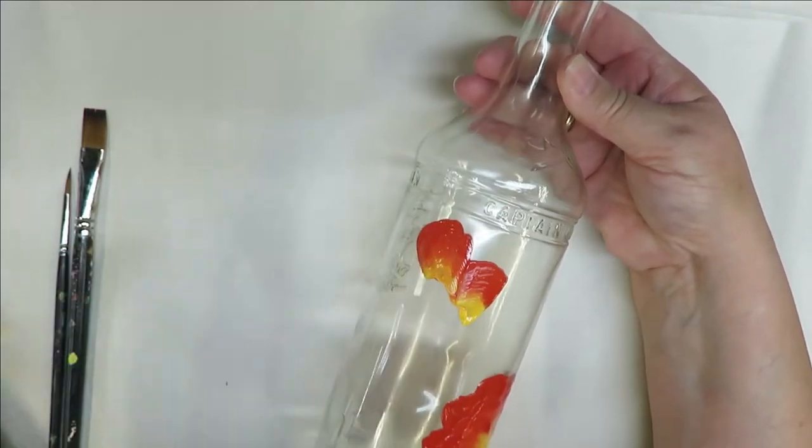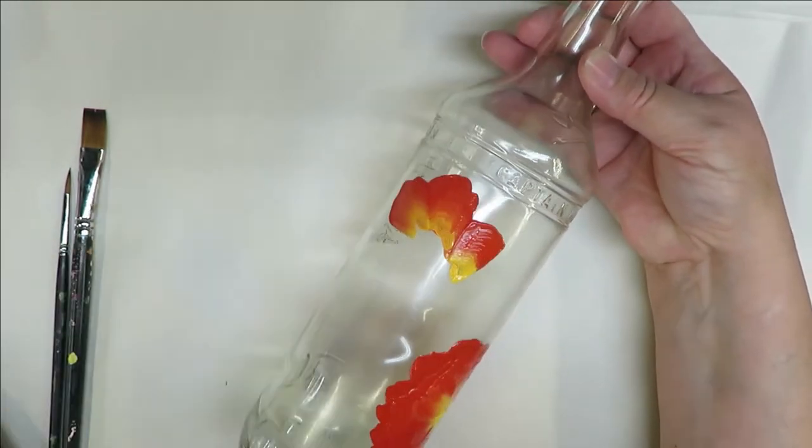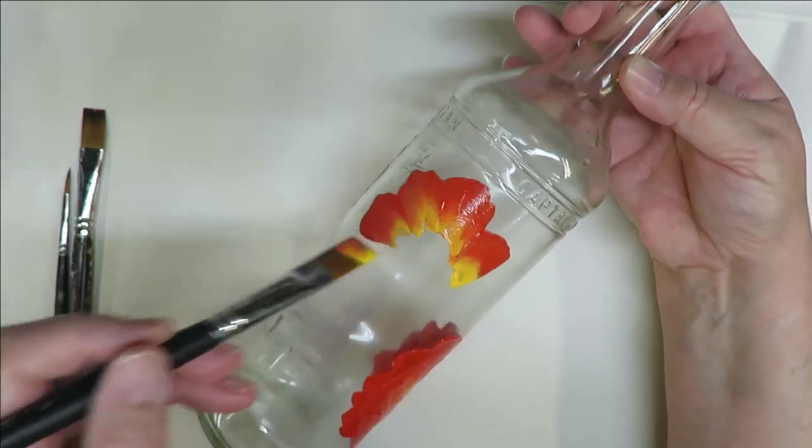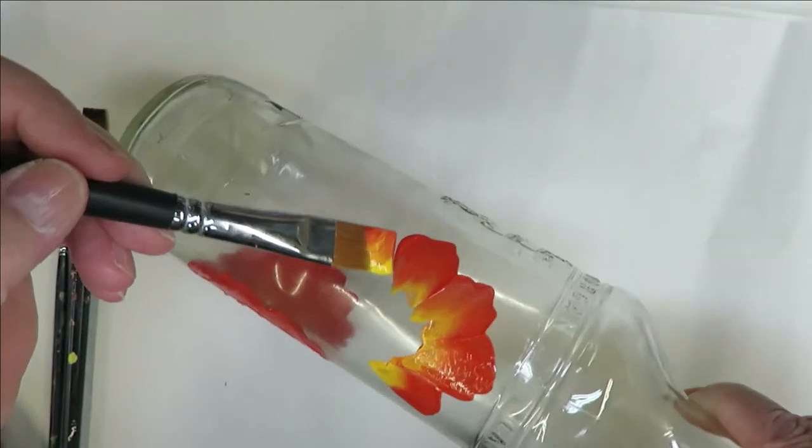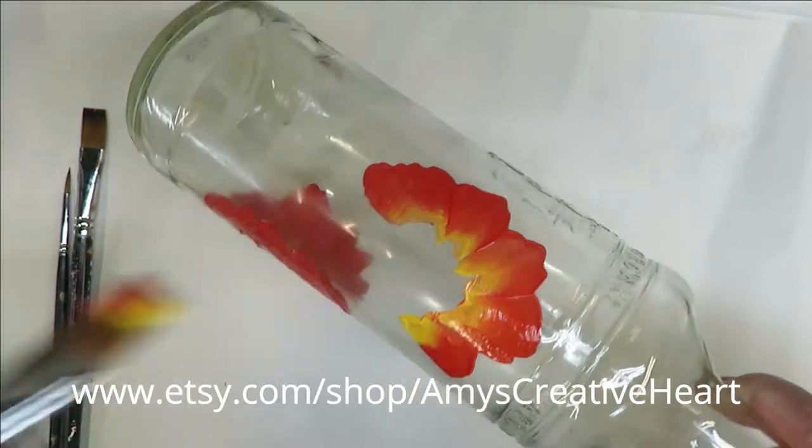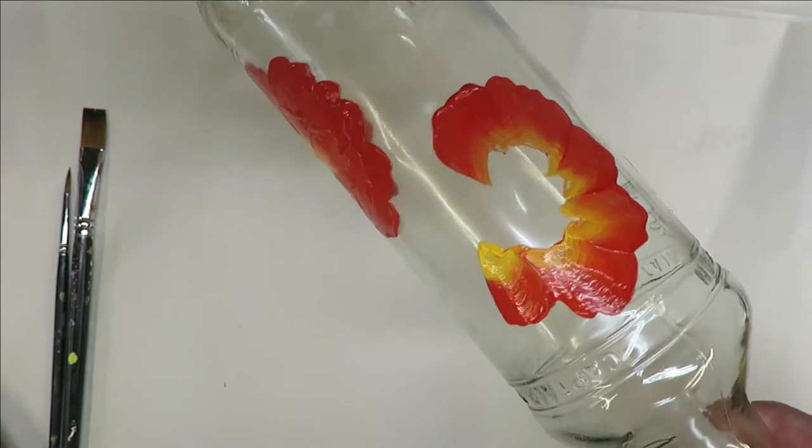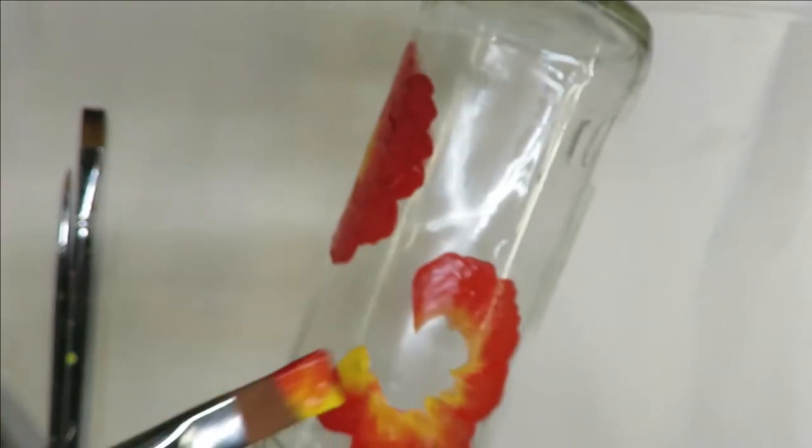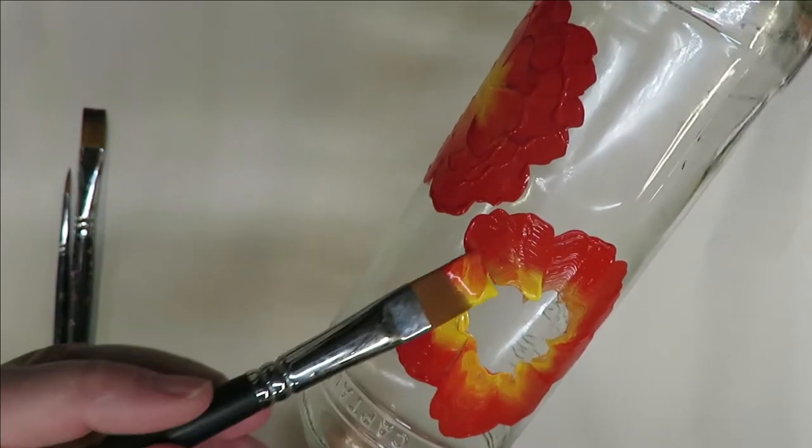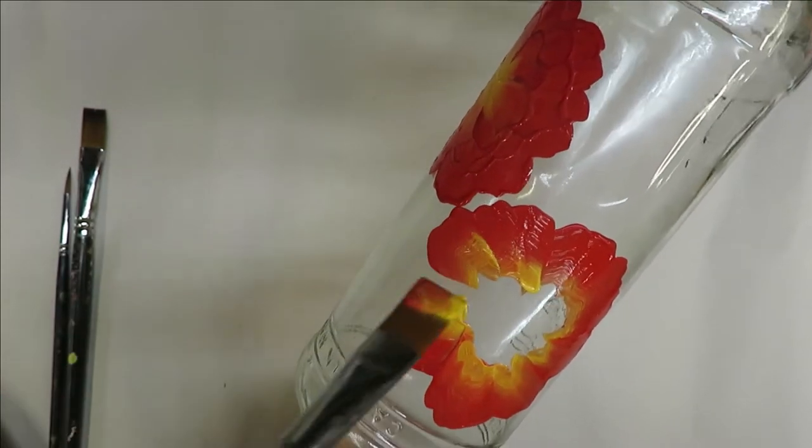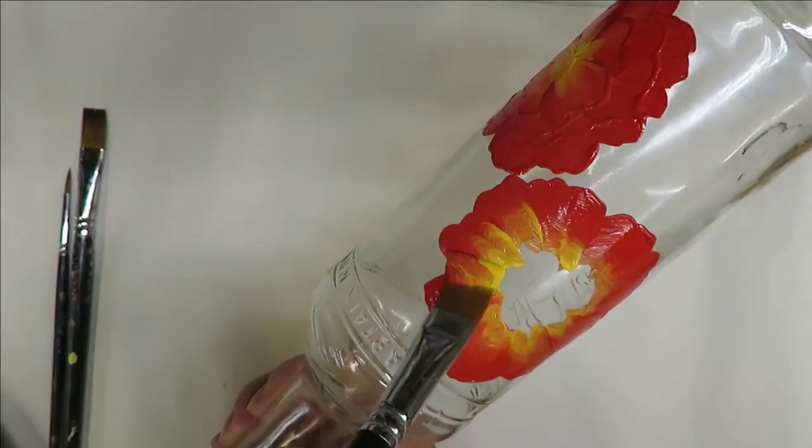This bottle has a lot of printing on it, so I'm just going to kind of go around it, not really paint over too much of the printing, just add to it. Just space the flowers out a little bit, try not to touch them. I'm really good at touching the other side while I'm talking and painting.